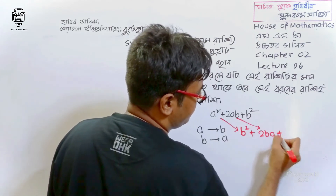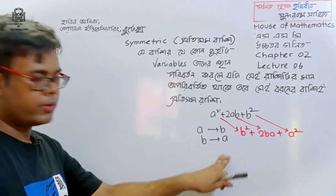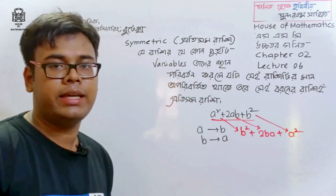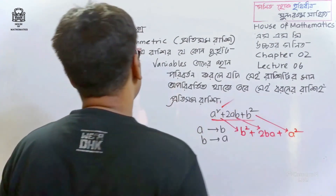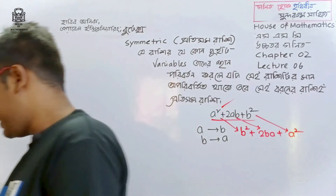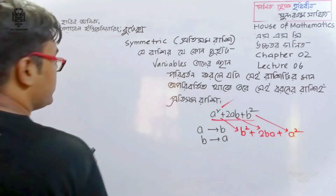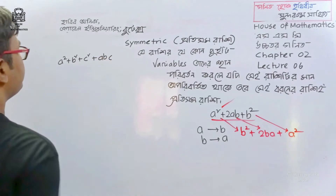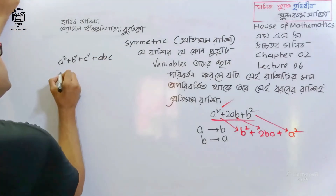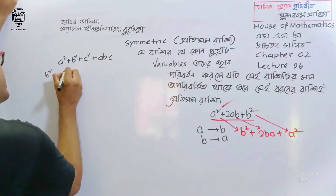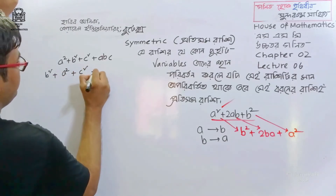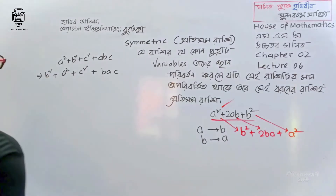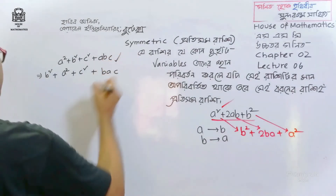For example, consider the expression a² plus b² plus c² with variables A, B, C. If we swap B and C — or swap A and C — the expression remains the same. So this is a symmetric expression. Our symmetric expression A, B, A — let's check: a² plus b² plus c².